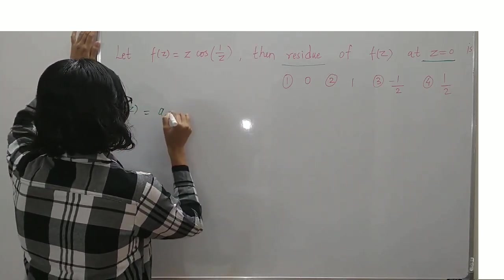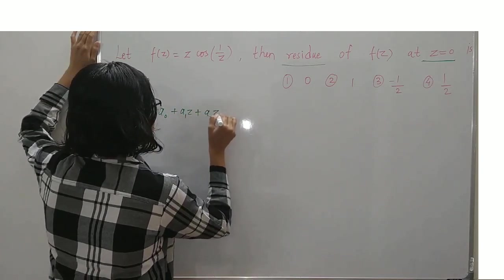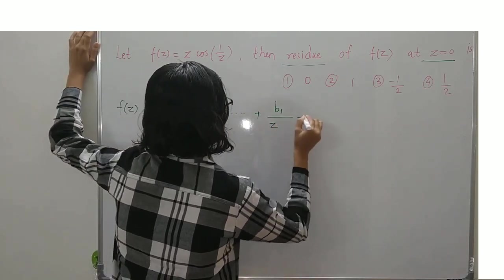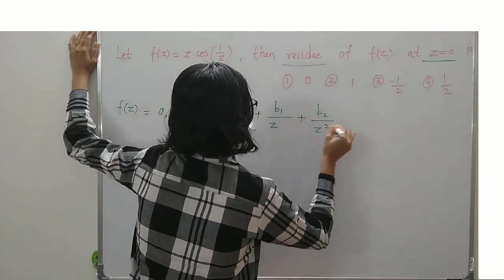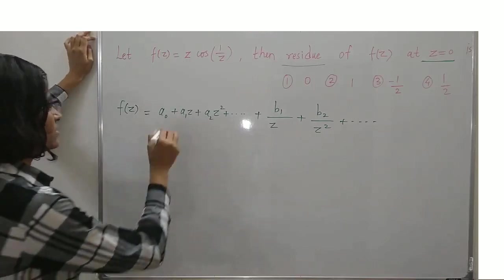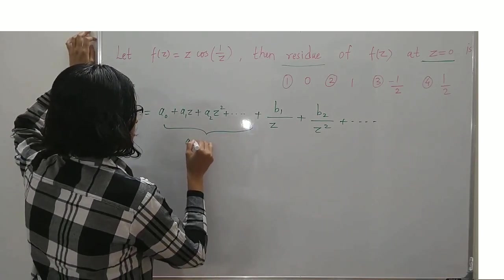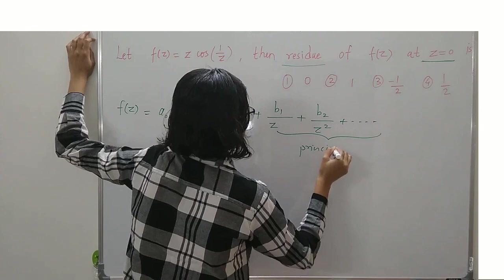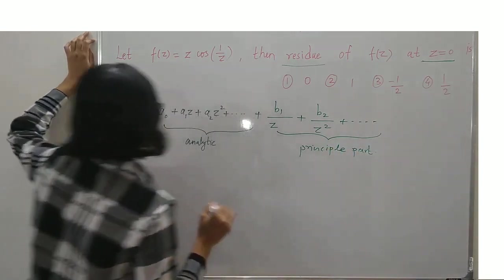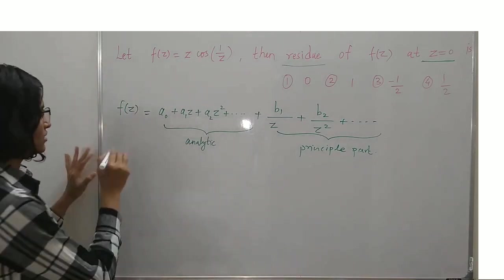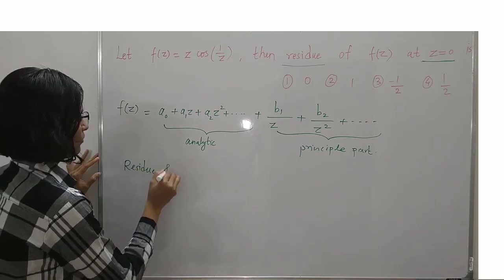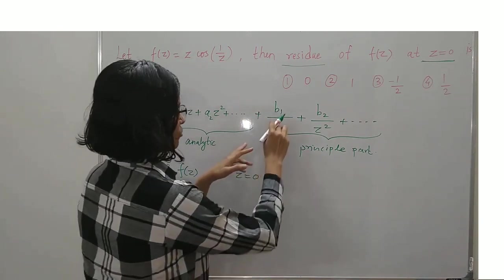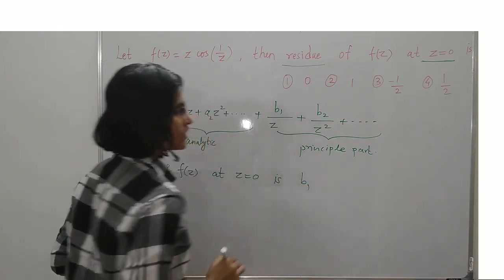If f(z) = a_0 + a_1·z + a_2·z² + ... + b_1/z + b_2/z² + ..., where the polynomial part is the analytic part and the negative power part is called the principal part, then the residue of f(z) at z = 0 is just the coefficient of 1/z, which is b_1.